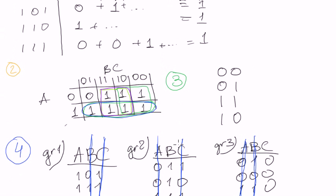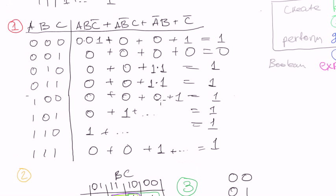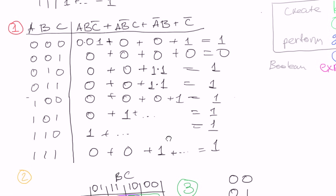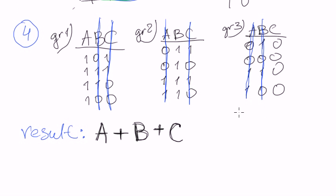And that is the result of the simplification of the original expression. That was this one. A pretty big one. And we simplified that to A + B + C. And we know for sure that it is the simplest possible form for this expression.